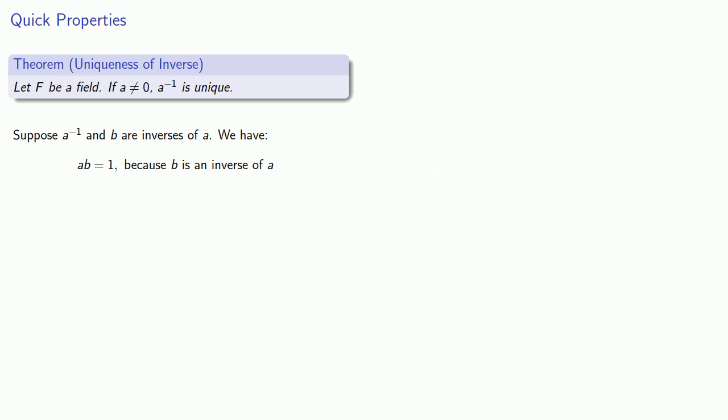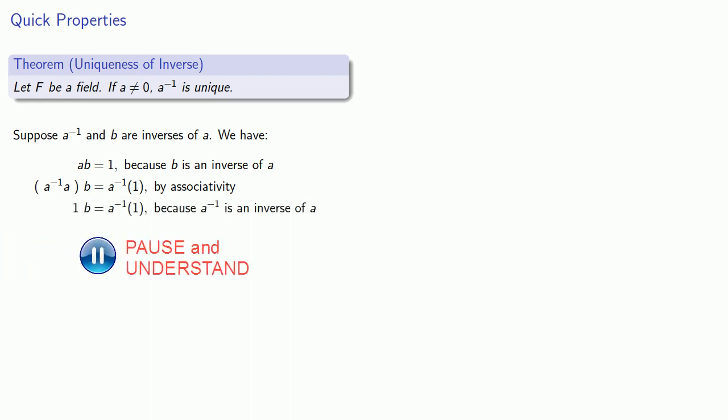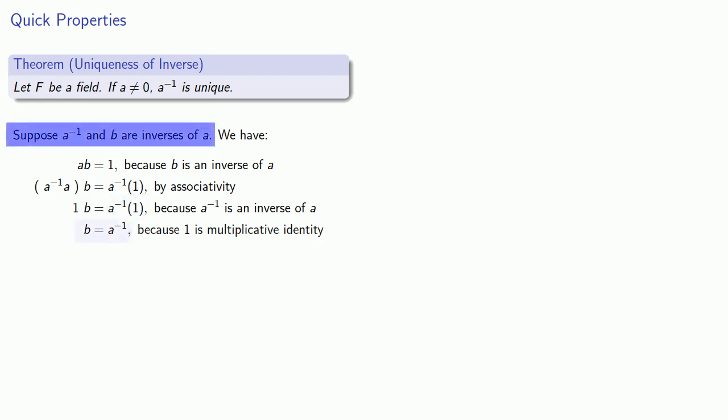I can multiply both sides by A inverse, and associativity allows me to group the A inverse A, which is going to give me the identity element. And because 1 is the identity element, 1 times B is B, and A inverse times 1 is A inverse. And so these two things that are inverses of A have to be the same thing.